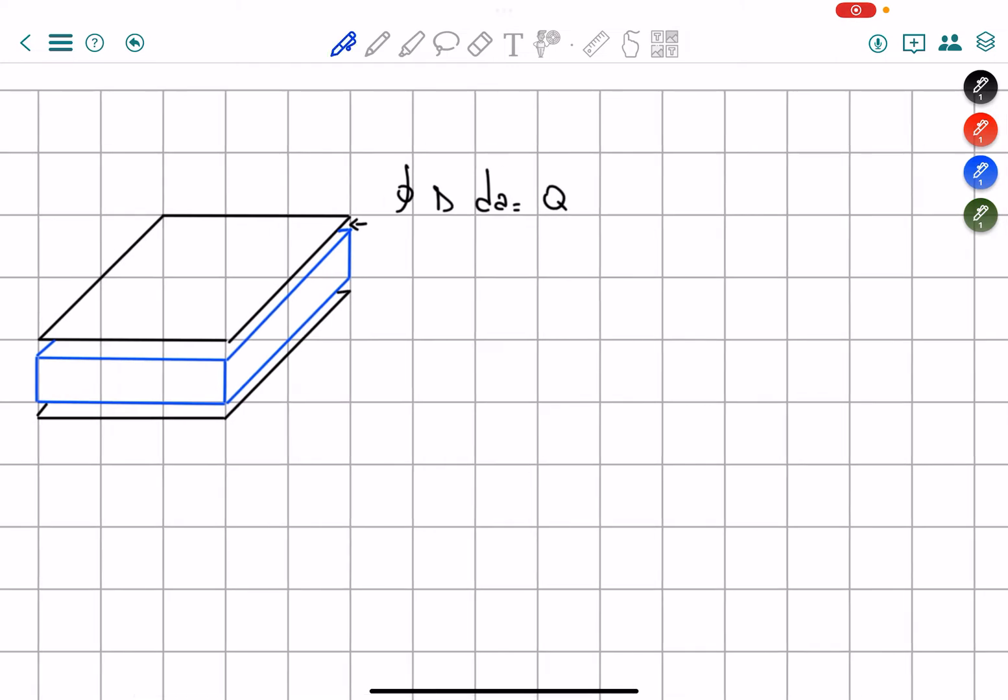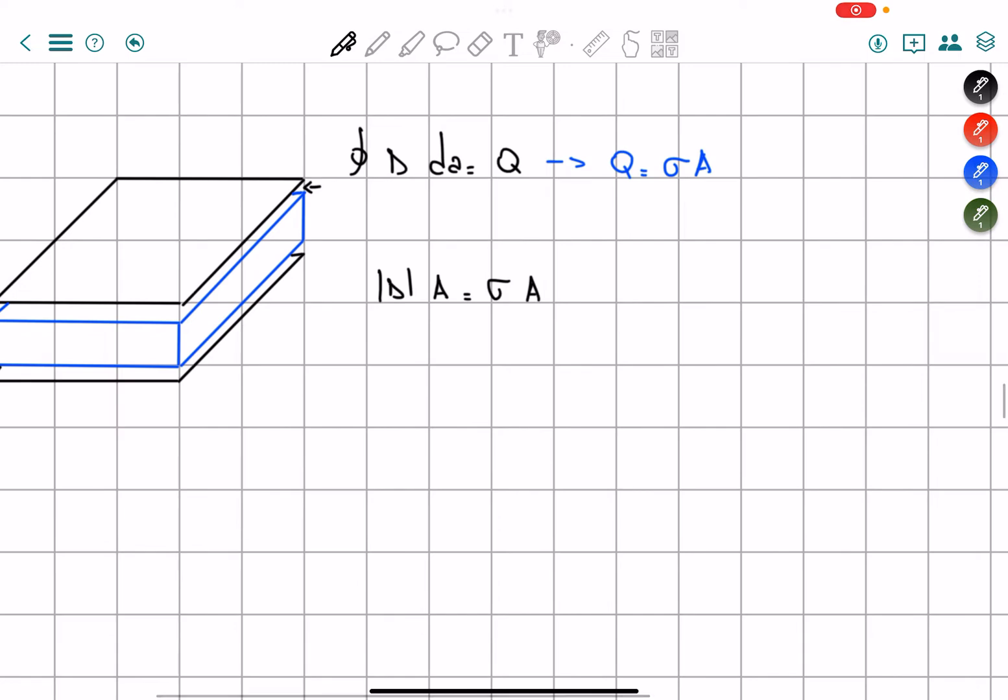Alright, so Q is equal to the surface charge times the area of course. And then we're going to have the absolute value of D times the area is equal to the surface charge times the area. And therefore we cancel out the area on both sides.